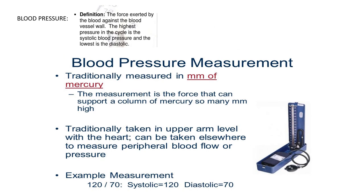The last topic is blood pressure, defined as the force exerted by the blood against the blood vessel. The highest pressure in the cycle is the systolic blood pressure and the lowest is diastolic. It is measured in mm of mercury using a device known as a sphygmomanometer, and mostly the brachial artery in the upper arm is used. The normal value is 120 over 80, where systole is 120 and diastole is 80.